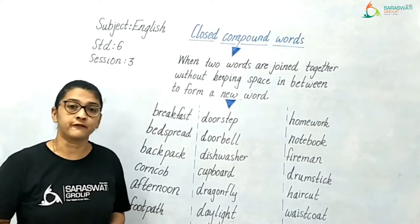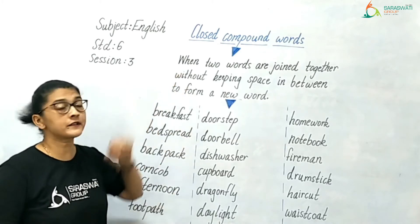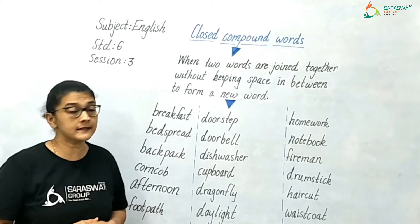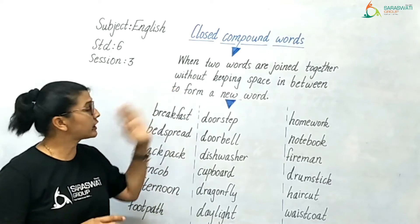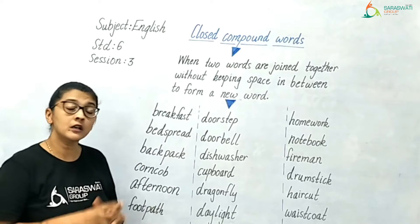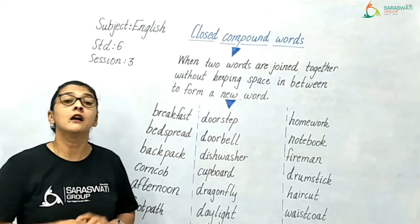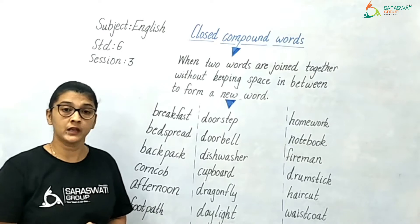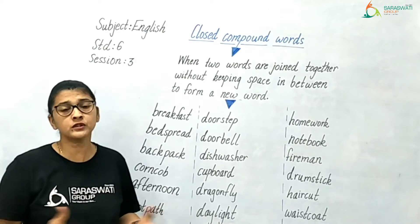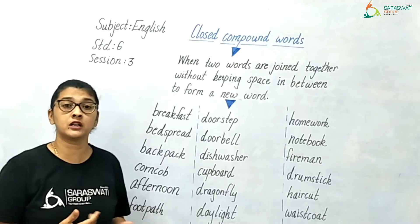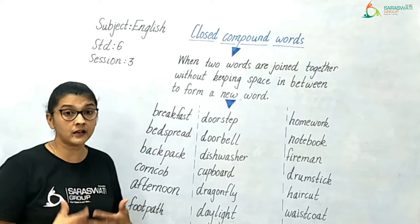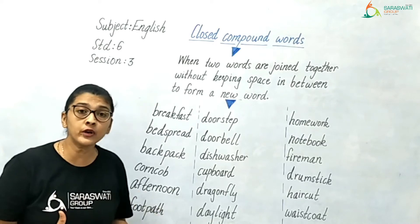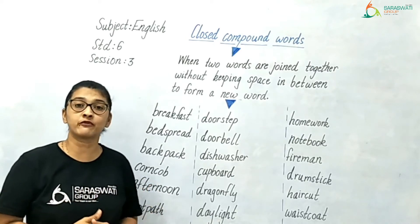The first type of compound word is known as a closed compound word. A closed compound word is when two words are joined together without keeping any space in between to form a new word. You are already using these words in your day-to-day speech and writing, but you may not be formally aware of the terminology.